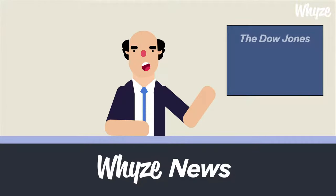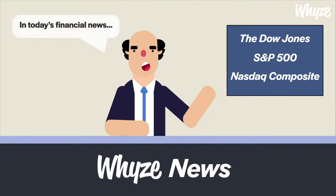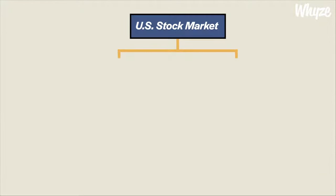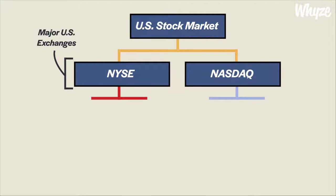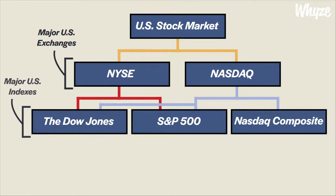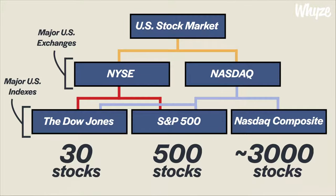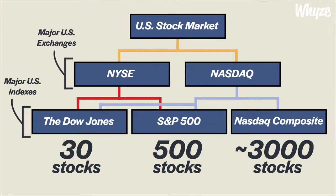You've probably heard names like the Dow Jones, S&P 500, and the Nasdaq Composite used frequently in daily financial news or in general conversations about the stock market, but what do these names represent? The Dow Jones, S&P 500, and the Nasdaq Composite are the three main stock indices in the United States. A stock index is simply a measure of the performance of a group of stocks.